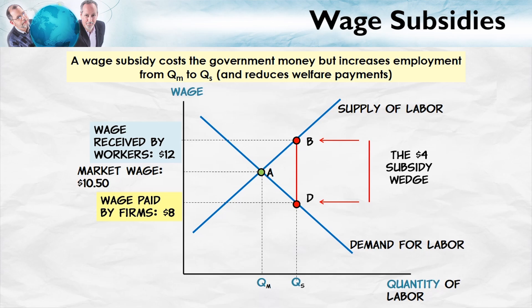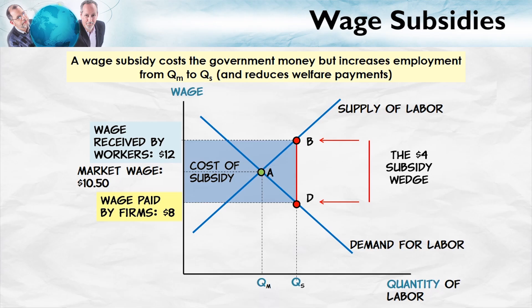What's the cost of a wage subsidy? The wage subsidy could have a big cost to taxpayers — namely the per-job cost, the $4 cost (or this could be a per-hour cost) times the total number of hours. So the cost of the subsidy is given by the entire blue area. However, Edmund Phelps argues that the actual cost would be less than this because of savings on crime and welfare payments and other things, so it may be worth doing.